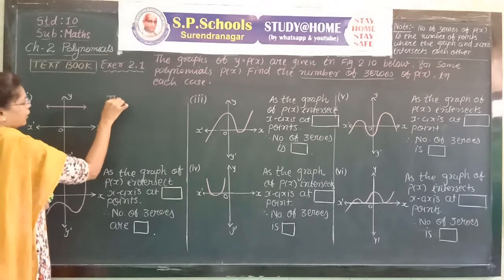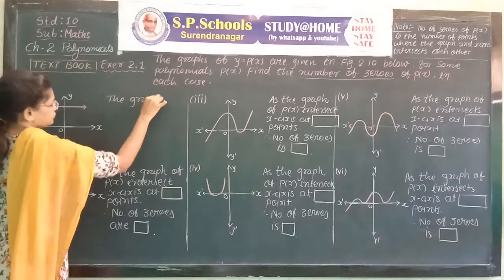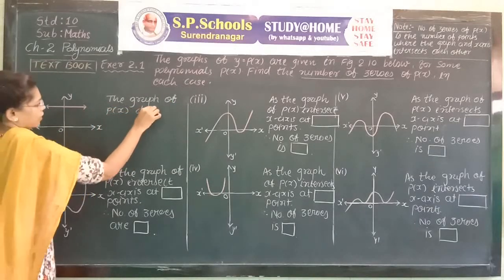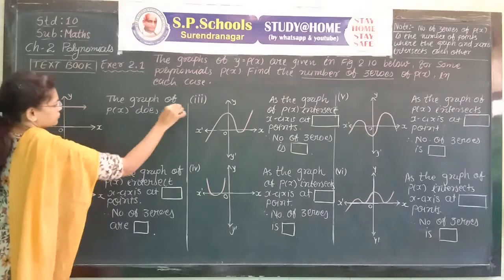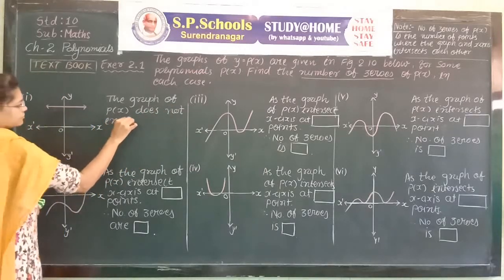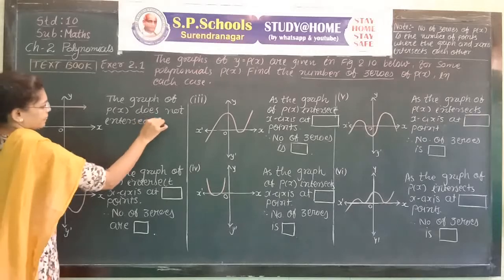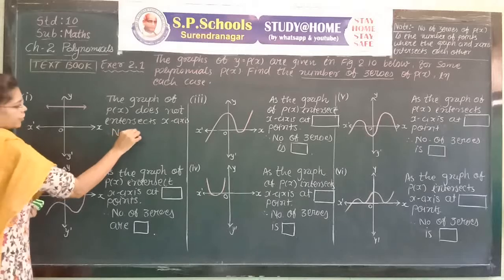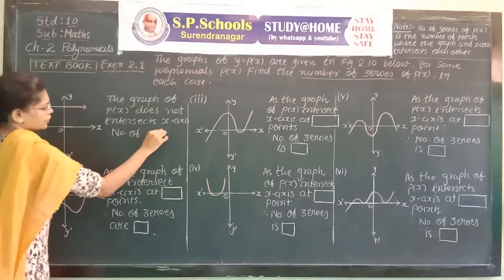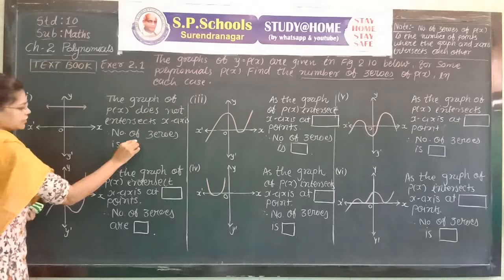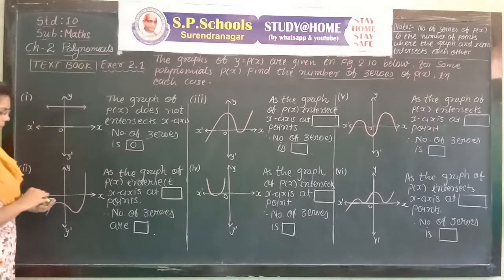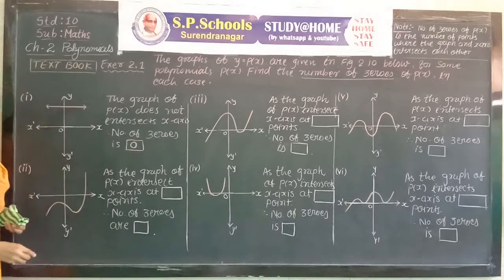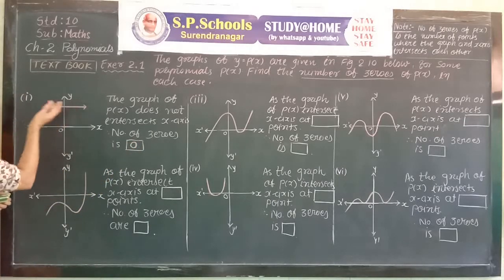In this case, the polynomial does not have any zero. The graph of P(x) does not intersect the x-axis. Therefore, the number of zeros is zero, because there is no common point between the graph and the x-axis.